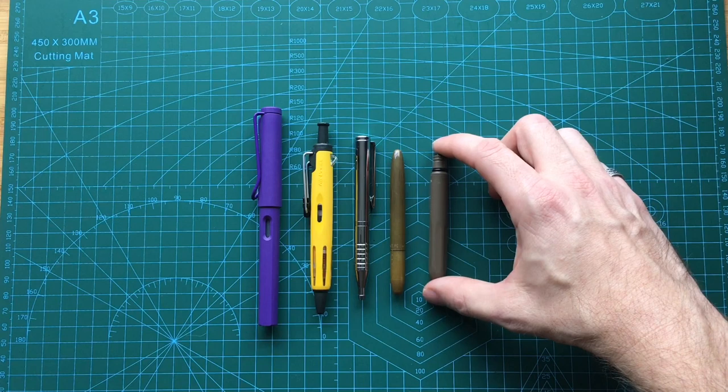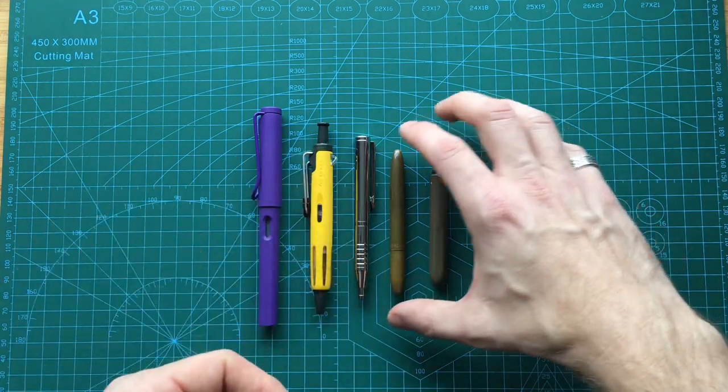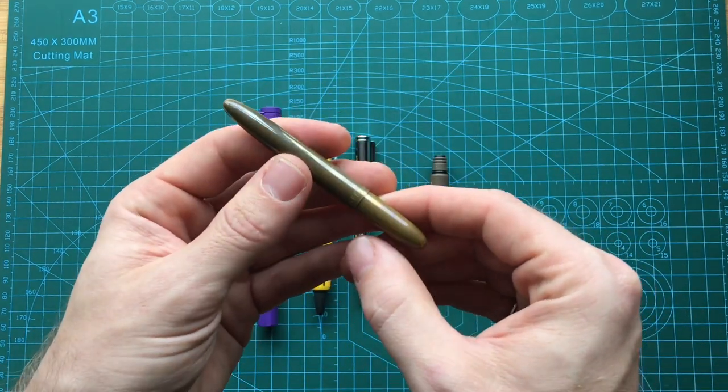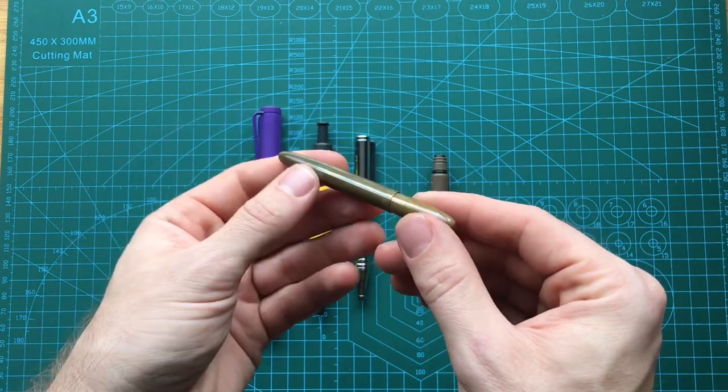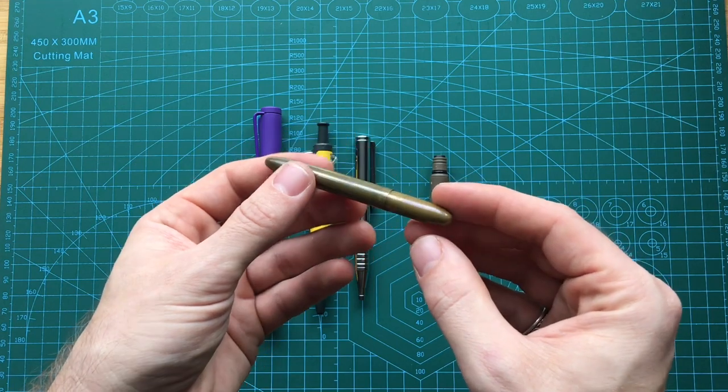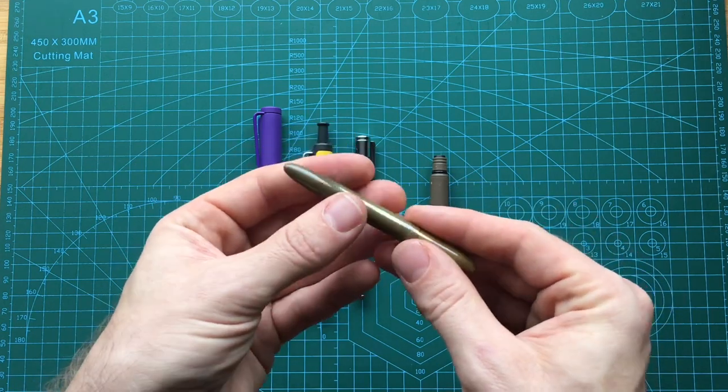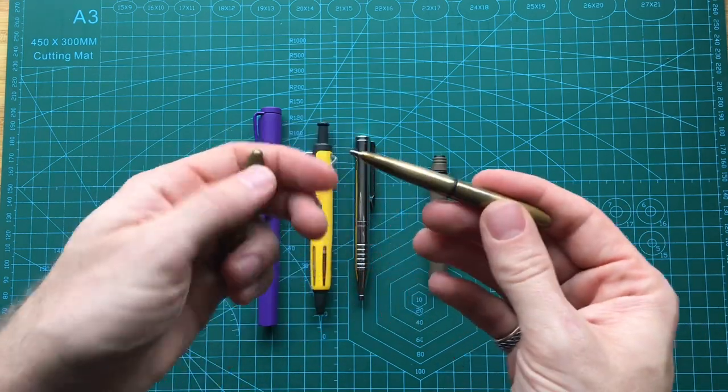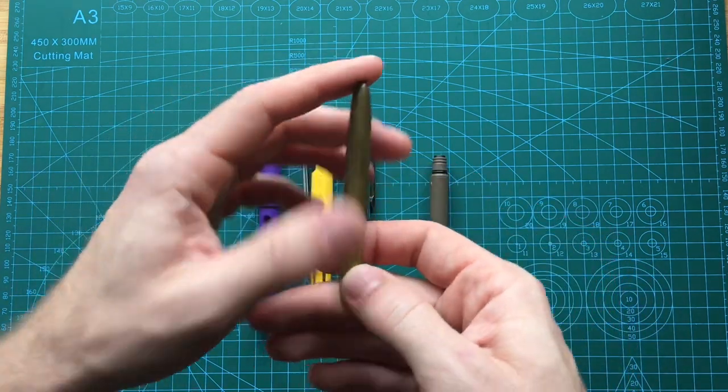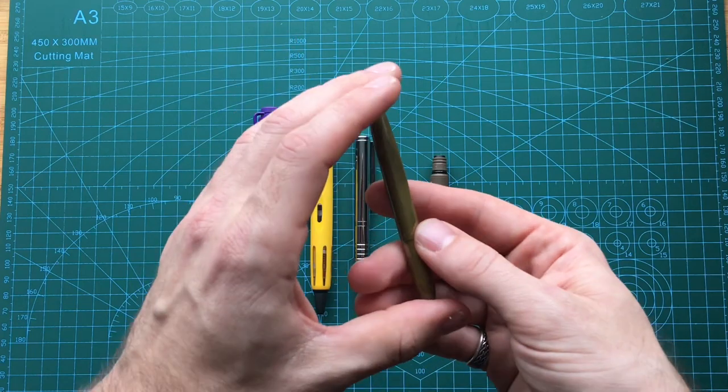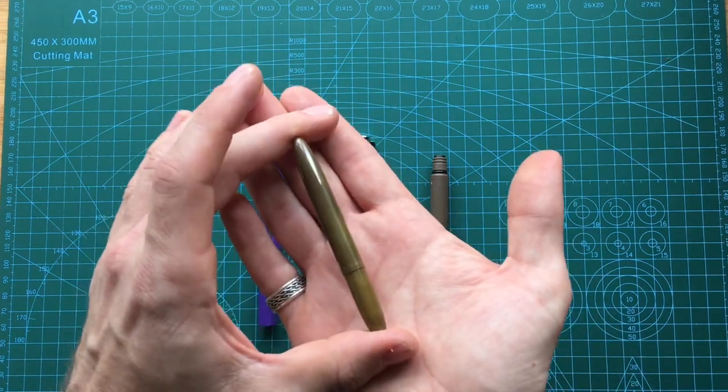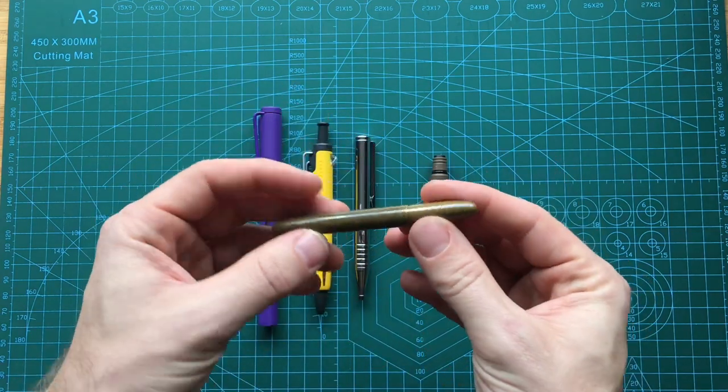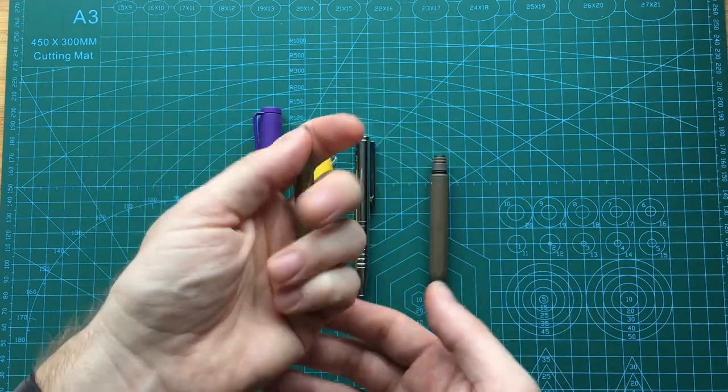This one has similar capabilities. This is the Fisher Bullet Space Pen. This particular one is in brass and it is patinaed. I've only had this probably less than a month and it's already looking really nice. These are, I think, the most expensive at 30 pounds. They vary in a number of different colors and styles, and you can also get a clip for them as well.